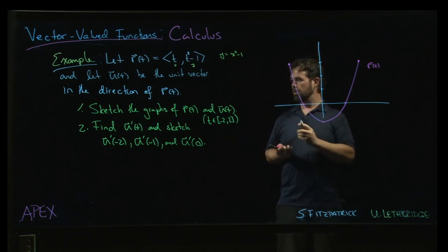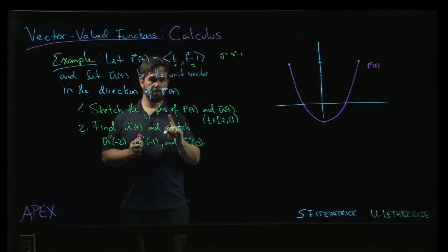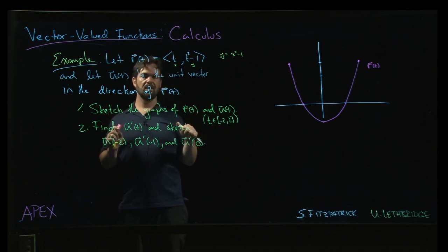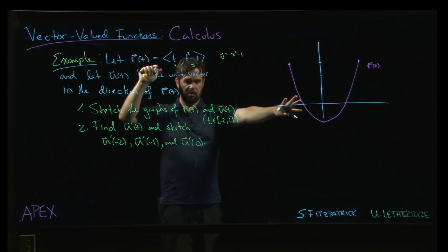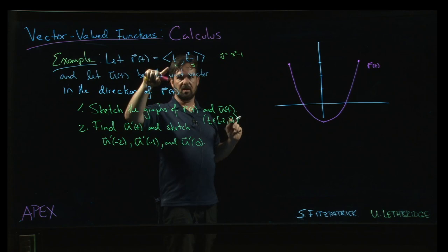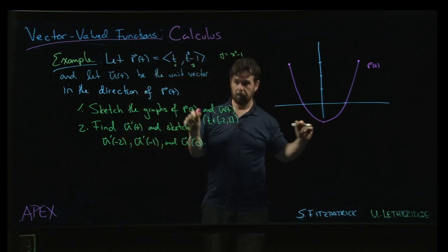Now what about u of t? We want u to be this unit vector. Now one thing you always want to be careful about: to have a unit vector we need to divide by the magnitude. So we want to make sure that the vector we start with is never zero. We can see that from the graph - it does not pass through the origin. Or looking at this, the only time the x component is zero is when t equals zero, and putting t equals zero in the y component does not give you zero. So we're good to go.